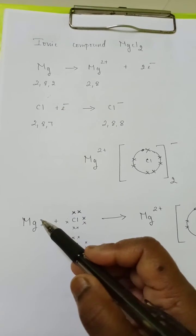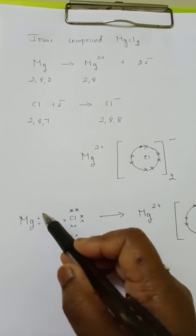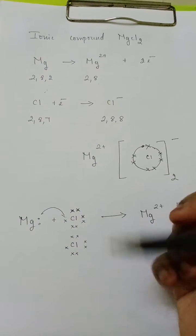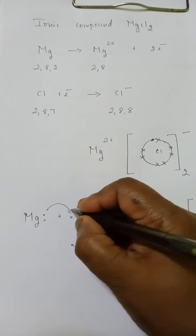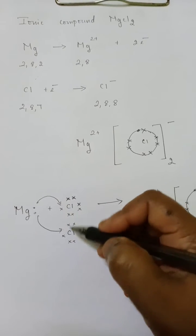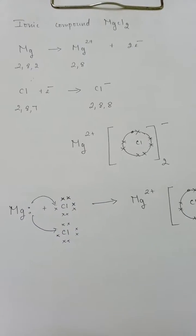I have differentiated with dots and crosses. So this electron will move to this chlorine, and this electron will move to this chlorine atom.